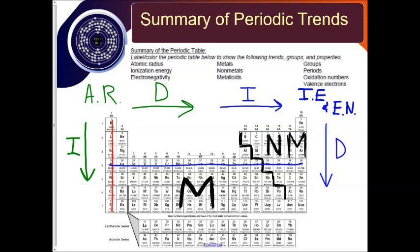Oxidation numbers will be at the top of each group, and valence electrons are the number in front of the A on the periodic table up at the top. That's it for today's video. Now it's time to practice this in your practice packets.